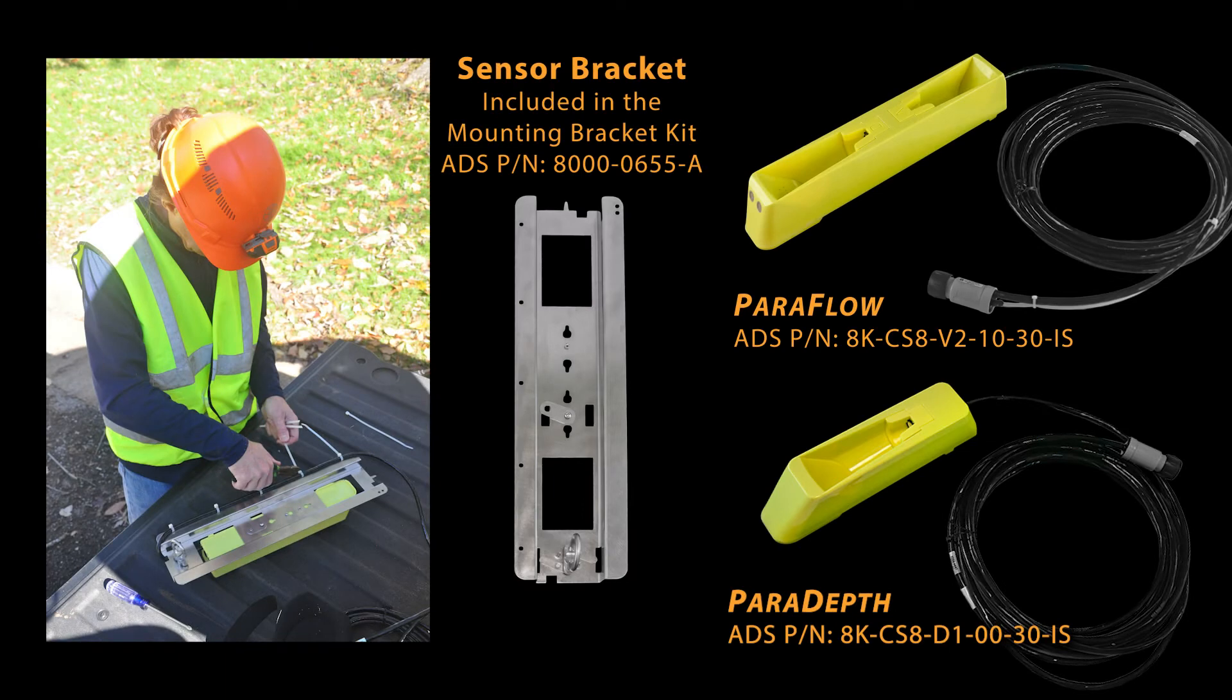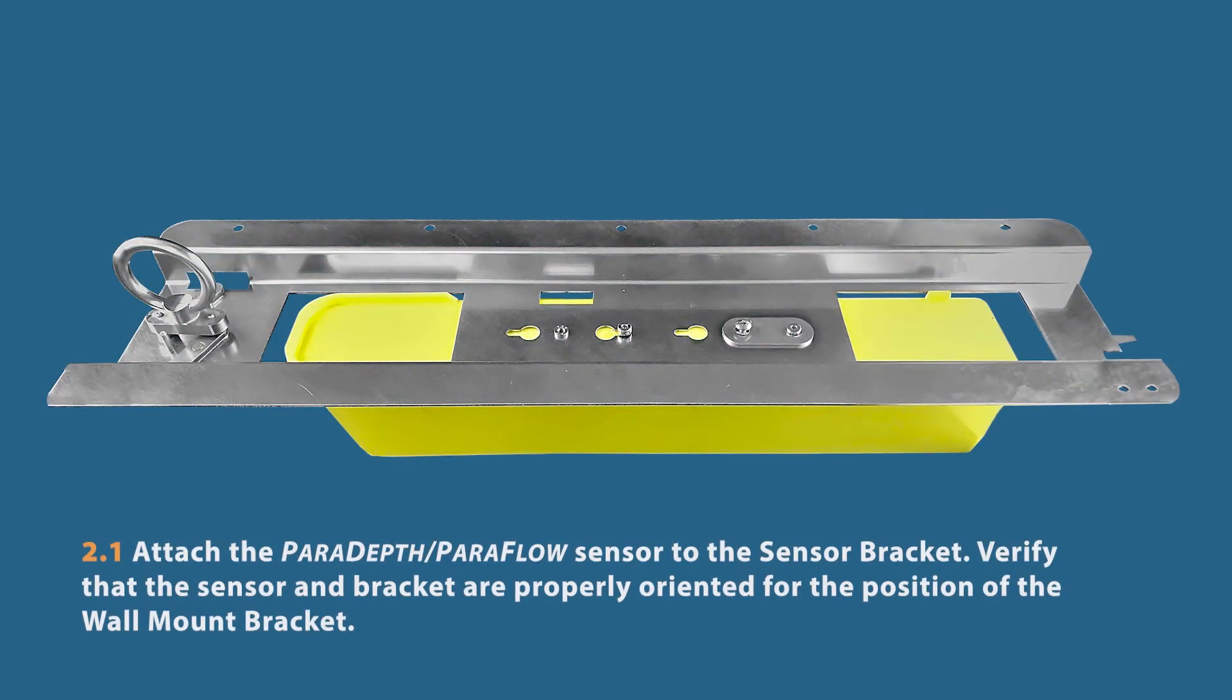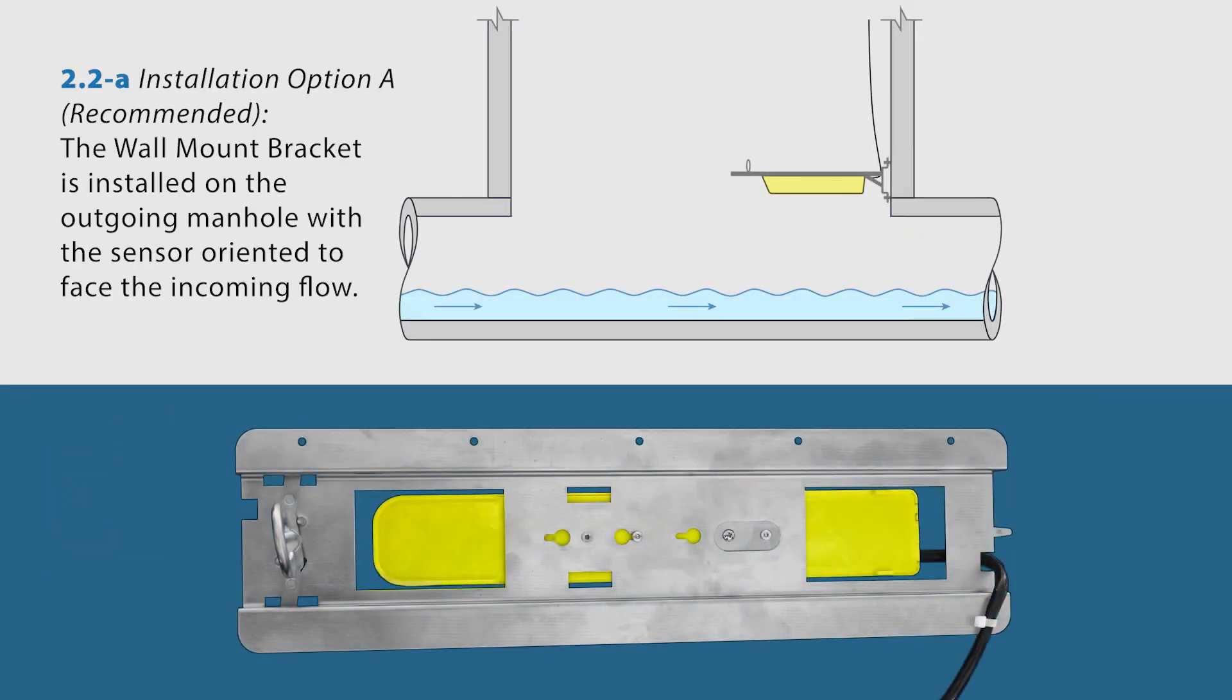The next step is to attach the Paradapt or Paraflow sensor to the sensor bracket. Attach the sensor to the sensor bracket taking care to orient properly based on the position of the wall mount bracket. When the wall mount bracket is installed on the outgoing wall, which is recommended,